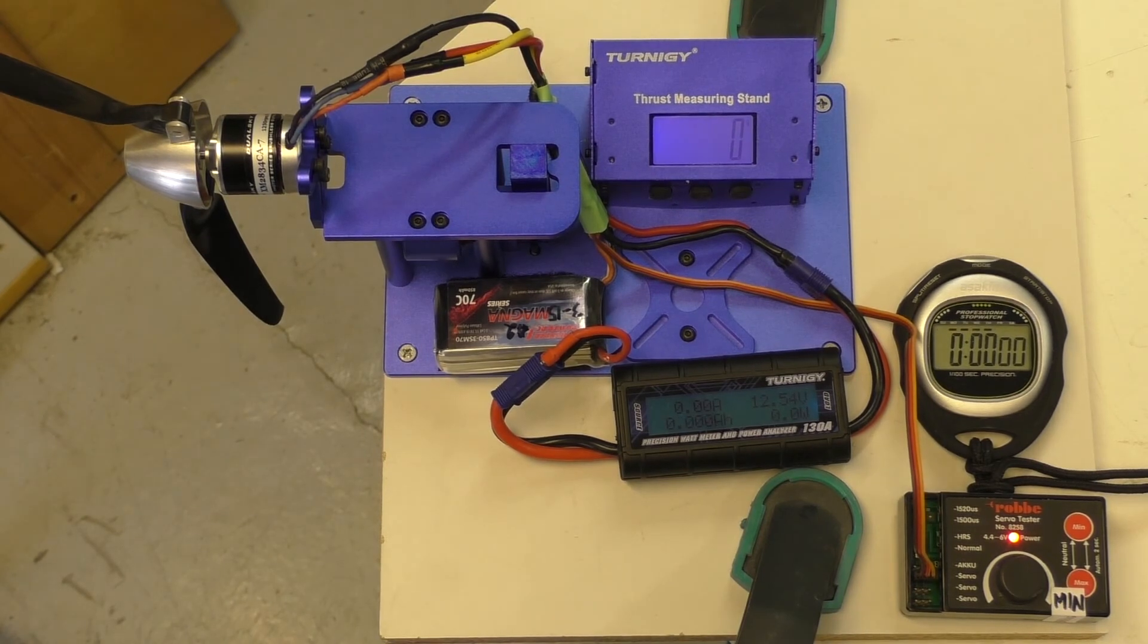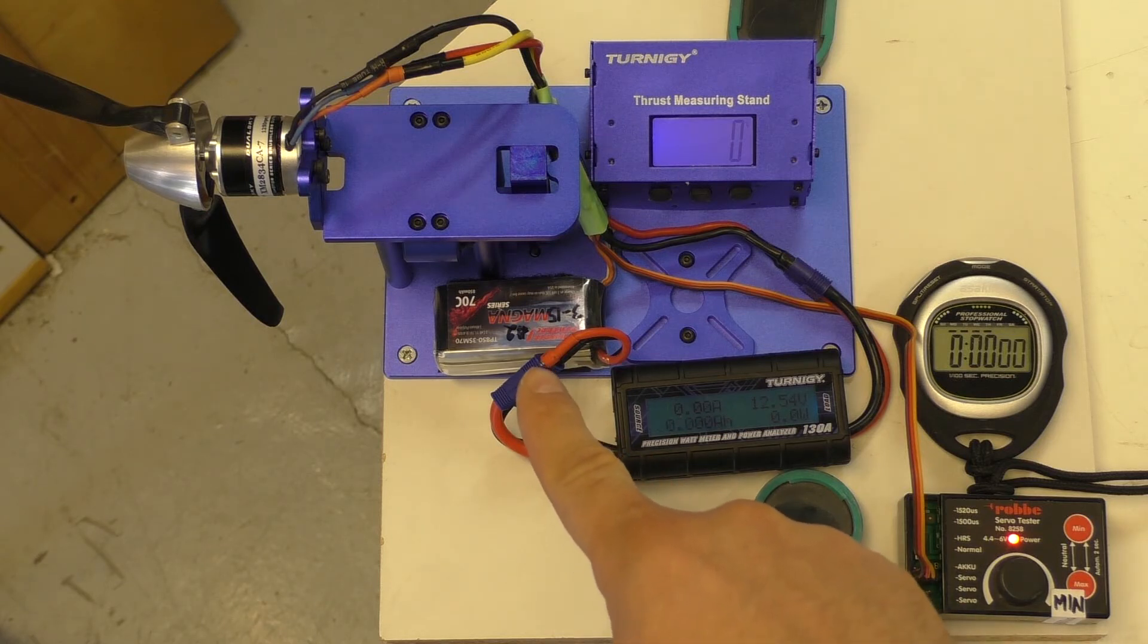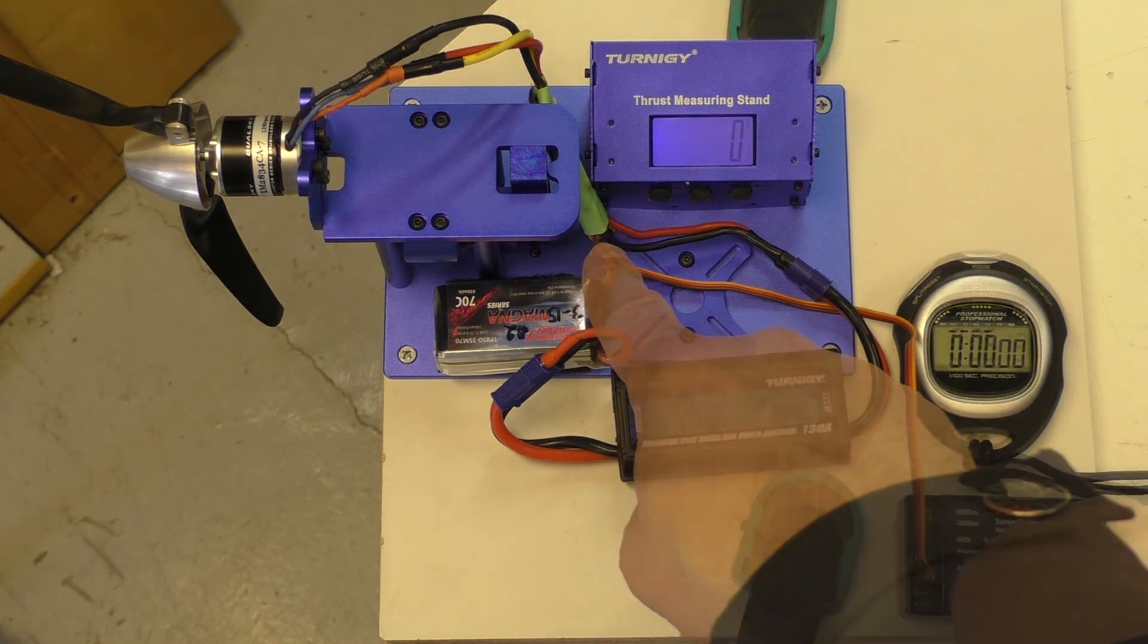Testing now with a bigger XM 2834 CA7 1250 kV motor with a higher power rating. Now it's a fully charged 850 milliamp 3S 70C battery. We still have the same 30 amp Multistar ESC.